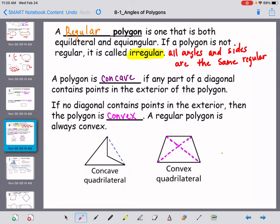Convex means that all of your diagonals when you draw them, they will always be on the inside of the polygon.